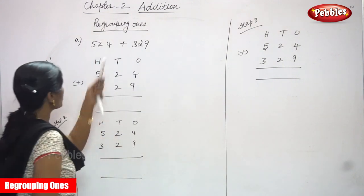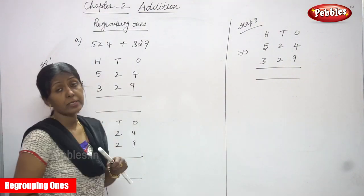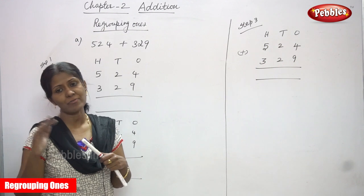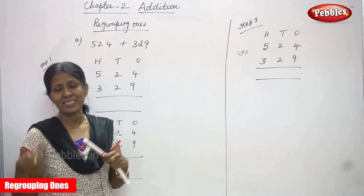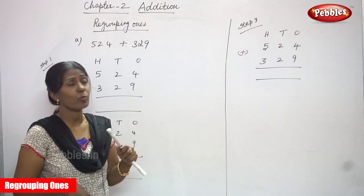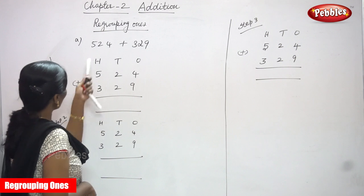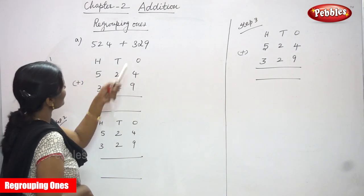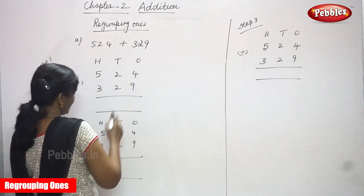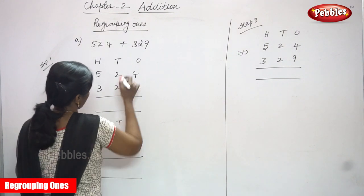Now we are going to do regrouping ones. Before, you have seen regrouping three digits and regrouping tens. Now we are going to see regrouping ones. Look at this number: 524 plus 329. First, we have to concentrate on the ones, so I'm going to highlight the numbers.